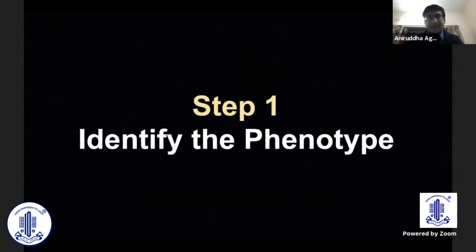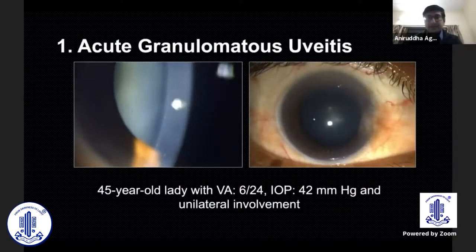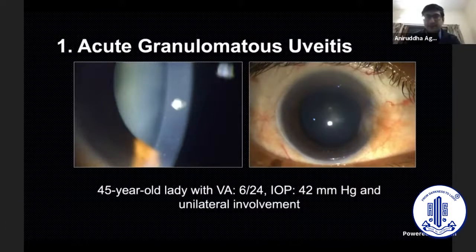The first step when you suspect viral anterior uveitis is to identify the phenotype. The first and most common phenotype is acute granulomatous uveitis, in which you have a patient who is about 45 years old, has some decrease in vision like 6/24, a very high pressure in the 40s, and usually unilateral involvement with granulomatous anterior uveitis.